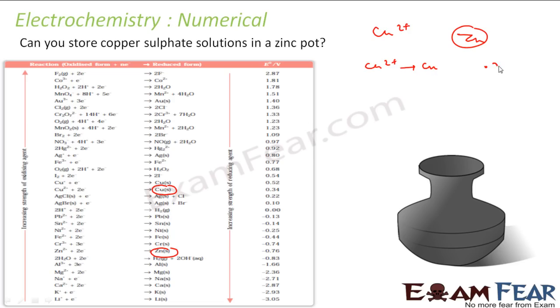So Cu2+ to copper is 0.34 volt and Zn2+ to zinc is -0.76. That means this reaction is more feasible, right? More feasible. This is not feasible. But if you flip this reaction, now this reaction Zn to Zn2+ will be 0.76 volt.